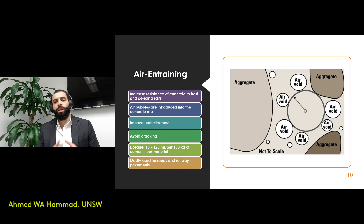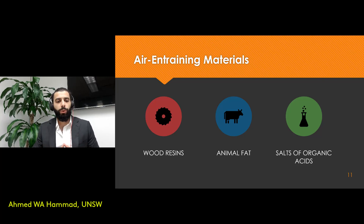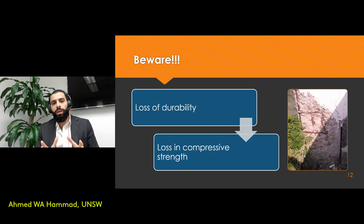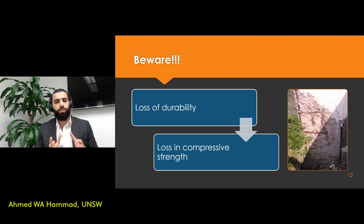Admixture dosage is generally expressed per 100 kilograms of cement present. Air-entraining admixtures are mostly utilized in roads and runway pavements. Examples of air-entraining materials include wood resins, animal fat, and salts of organic acids. However, you must be aware that overusing air-entraining admixtures in your concrete mix can lead to loss of durability and a reduction in compressive strength.